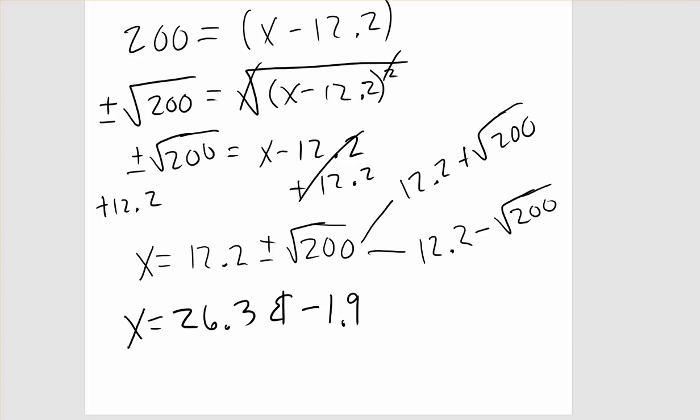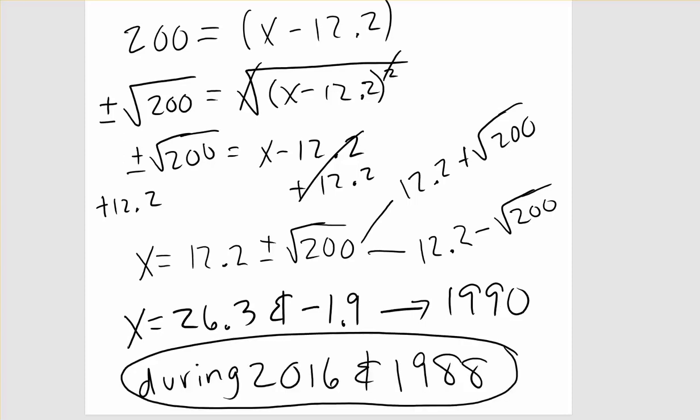Remember our starting year was 1990, so we should add 1990 to both of these values to determine the years. So our final answer here should be during the years of 2016 and 1988 were when 5 percent of high schoolers were smoking.